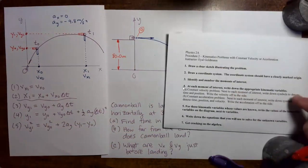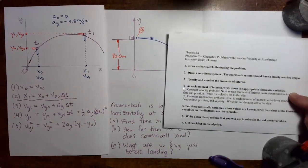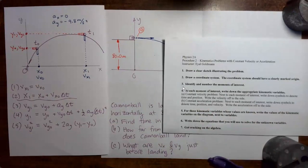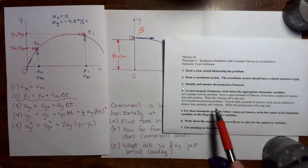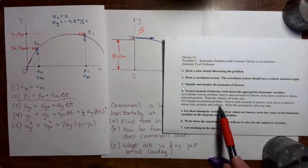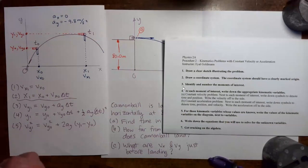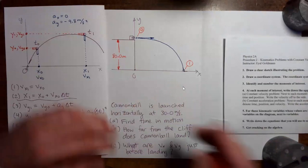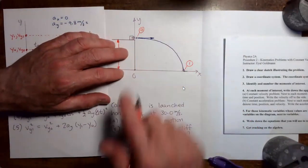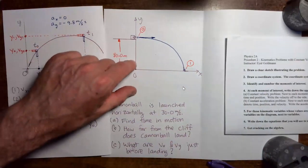Okay, now at each moment of interest, write down the appropriate kinematic variables. This is a constant acceleration problem. So as we did in the previous constant acceleration problems, we will write down symbols to denote time, position, and velocity. Although in this case, we're going to need two variables to describe position and two variables to describe velocity.